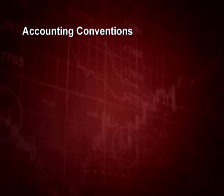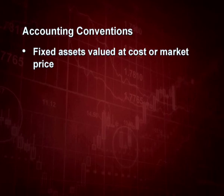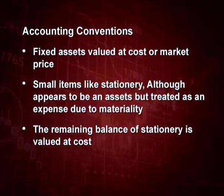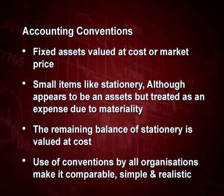The next point is accounting conventions. Fixed assets are always valued at cost or market price. This convention is followed so that we record on historical cost and there is no change due to inflation in the accounts. Small items like stationery, although they appear to be an asset, are treated as an expense due to the concept of materiality. Whatever is material must be recorded; whatever is immaterial is shown as an expense or not recorded at all. The remaining balance of stationery at the end will be valued at cost. Use of these conventions by all organizations makes financial statements very comparable, simple and realistic.